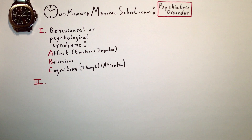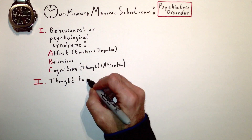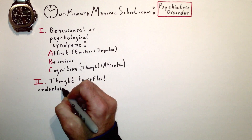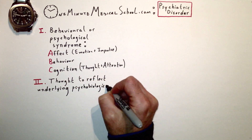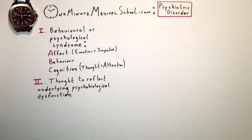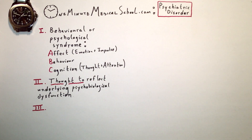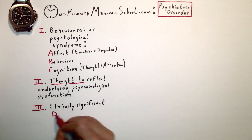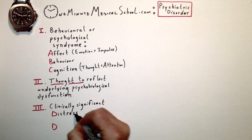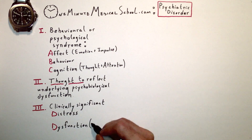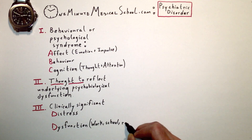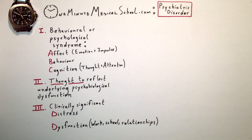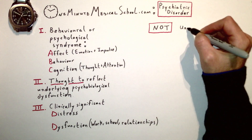Second of all, it is thought but not known to reflect underlying psychobiological dysfunction. Third, there has to be clinically significant distress to the individual or dysfunction in their work, school, or other important relationships or domains of function.